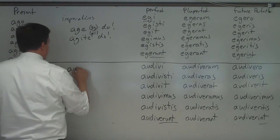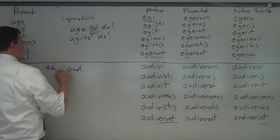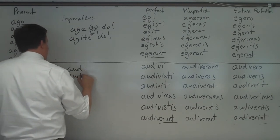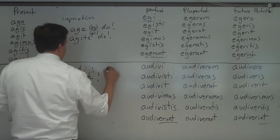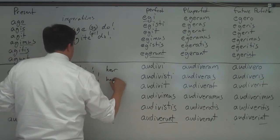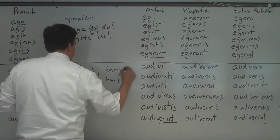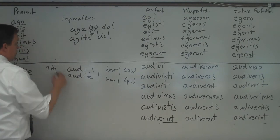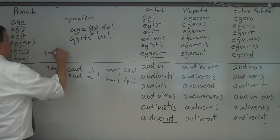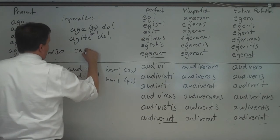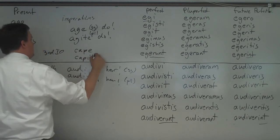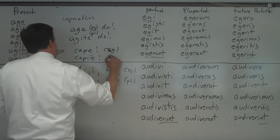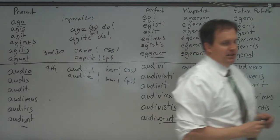For the fourth conjugation, audire is the infinitive. Remove -re and you get audi; then audite for the plural — singular and plural. The third-IO works just like the third. So for capio, it would be cape and capite — singular and plural. And there we go.